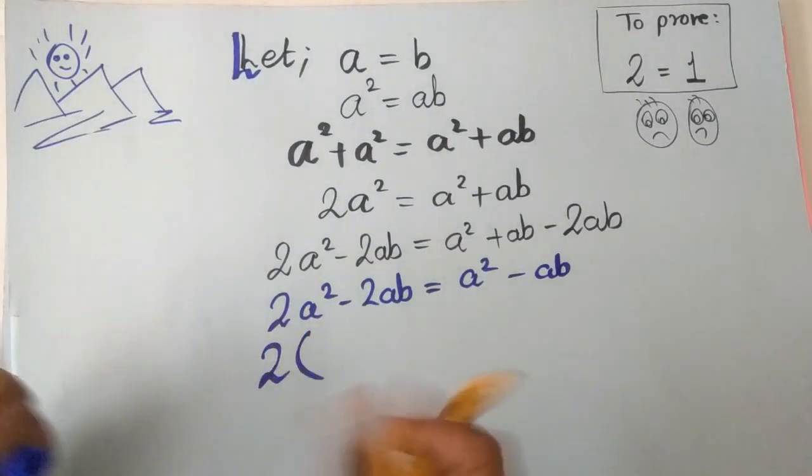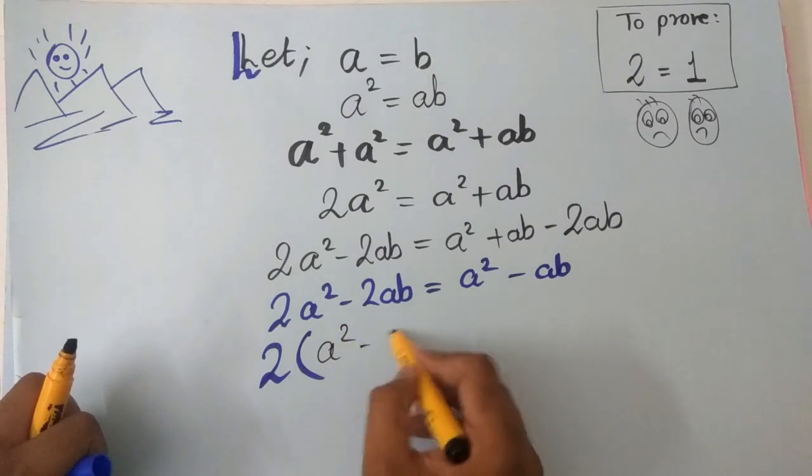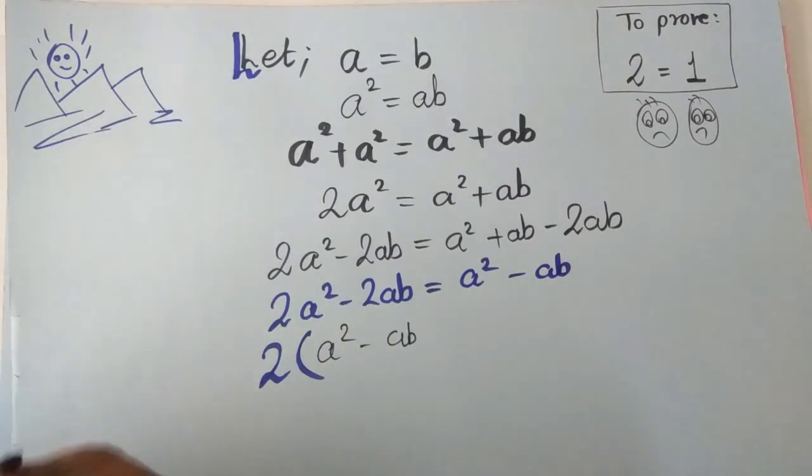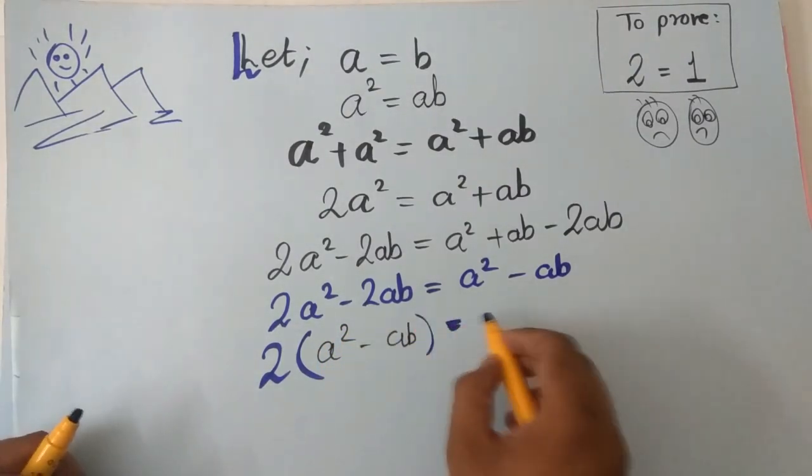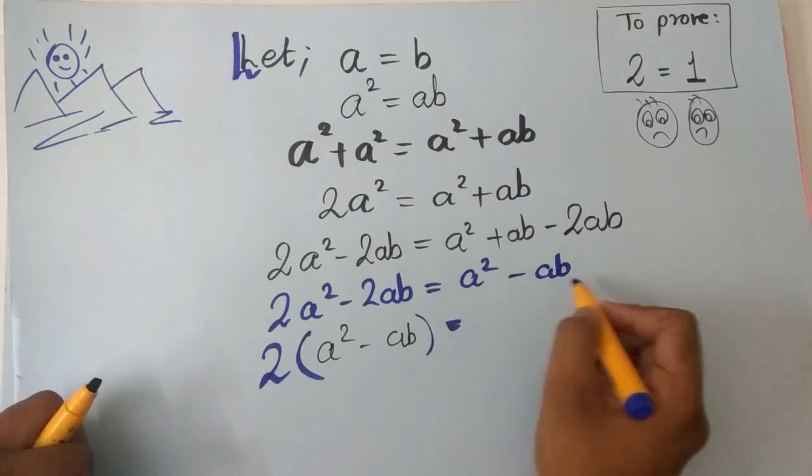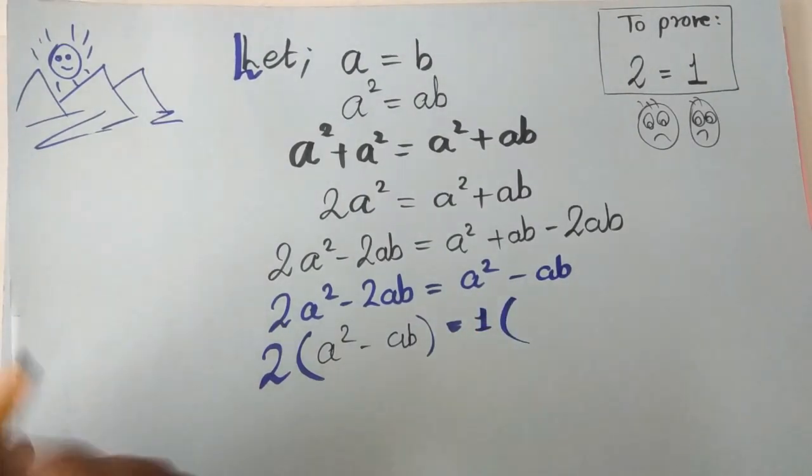And we are left with a square minus ab. Here take one common, nothing means one.